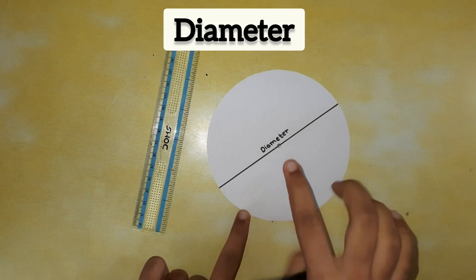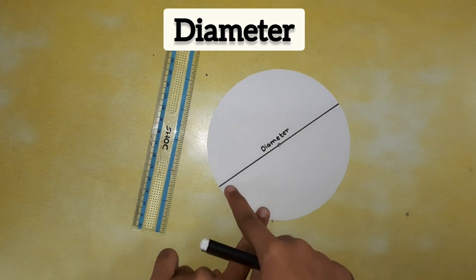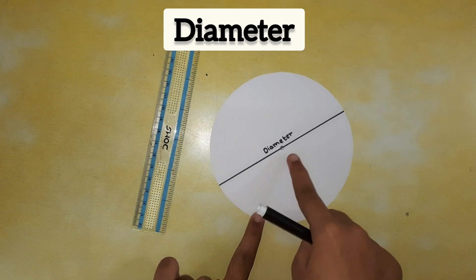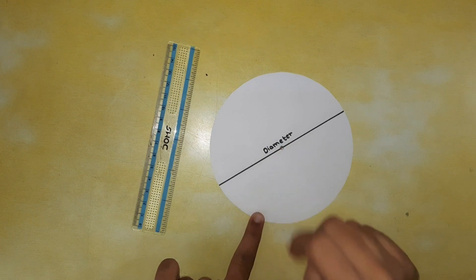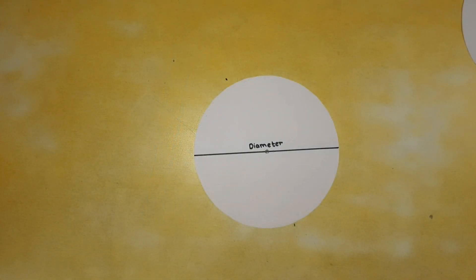A line which joins two ends of a circle and also passes through the center point is known as the diameter of a circle.